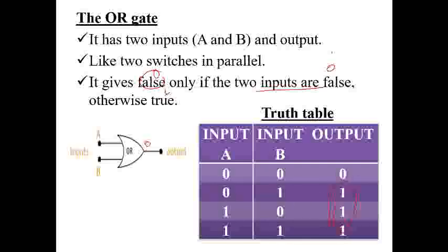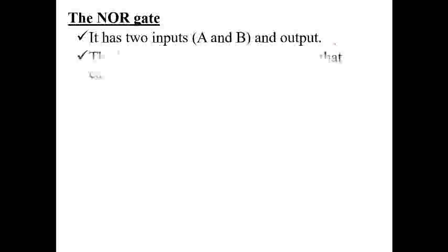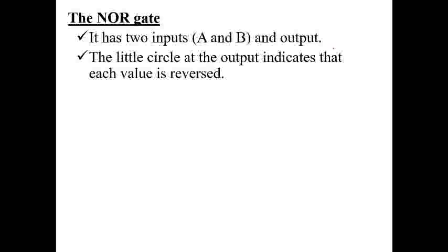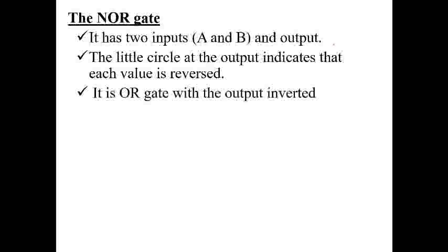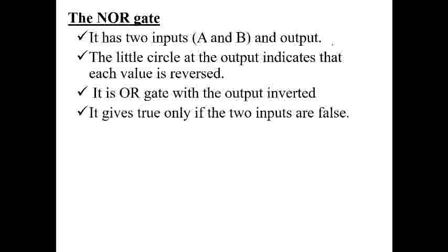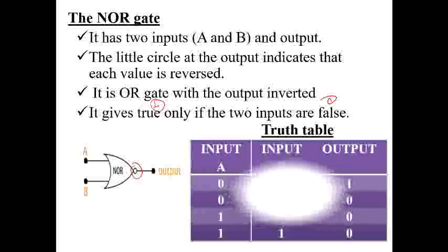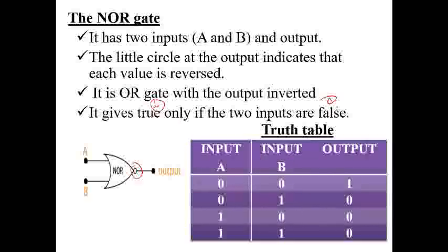The fifth gate is the NOR gate. It has two inputs and one output, and the small circle at the output indicates that each value is the reverse of the OR gate — it is the OR gate with the output inverted. It gives 1 only when both inputs are 0; otherwise the result is 0. Truth table: 0,0→1; 0,1→0; 1,0→0; 1,1→0. This is the inverse of the OR gate.